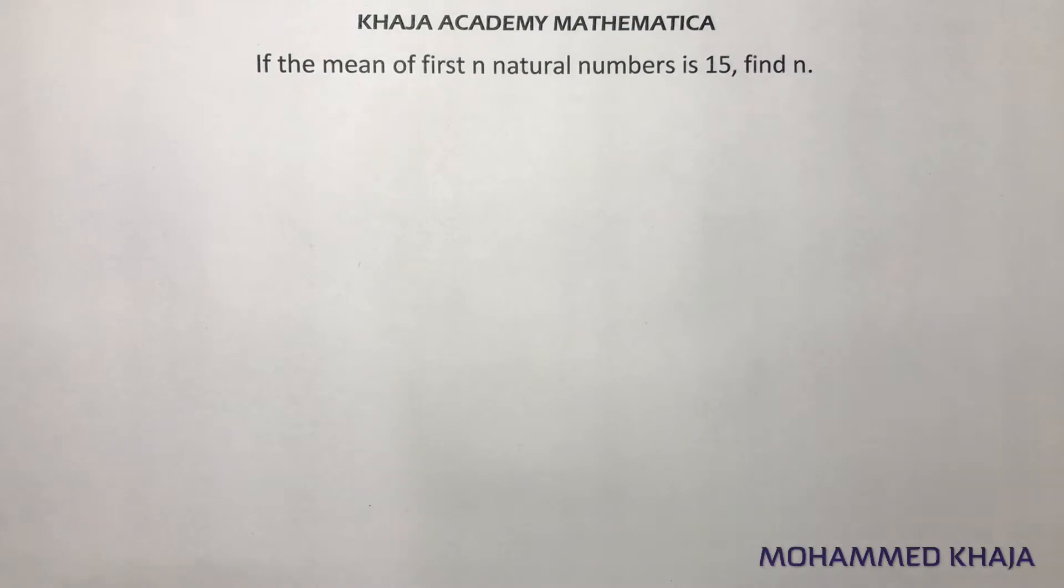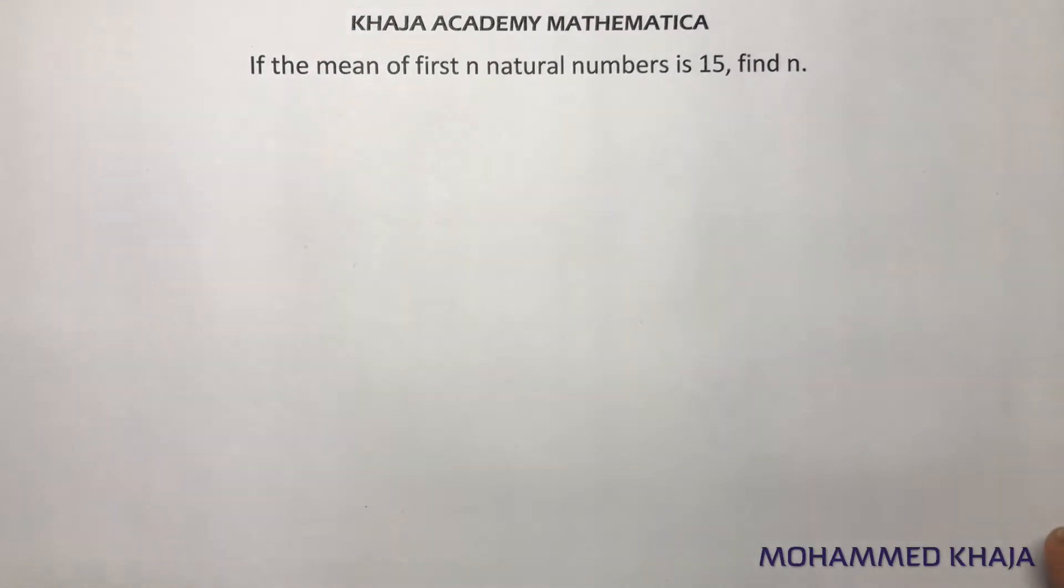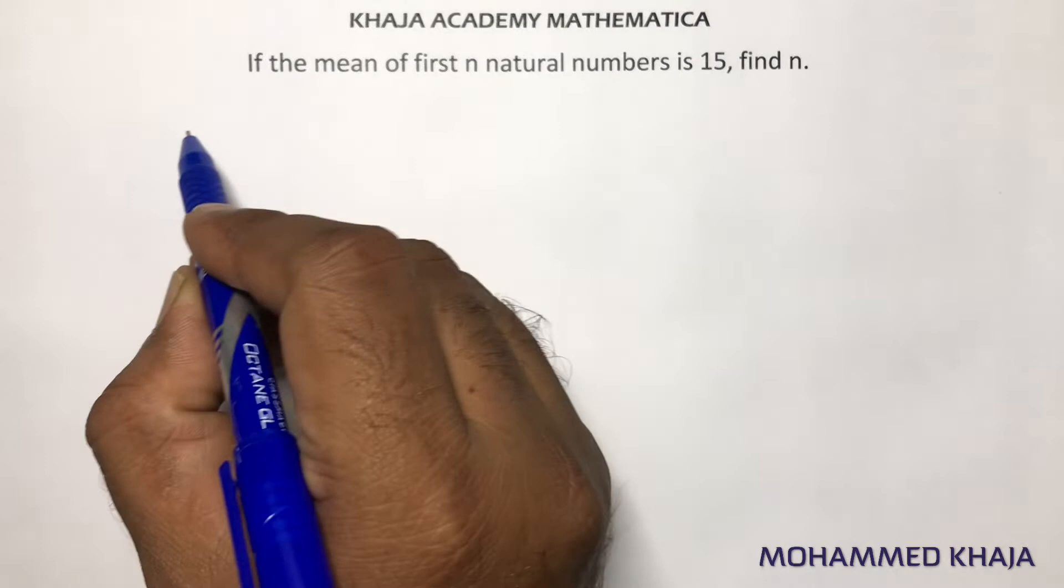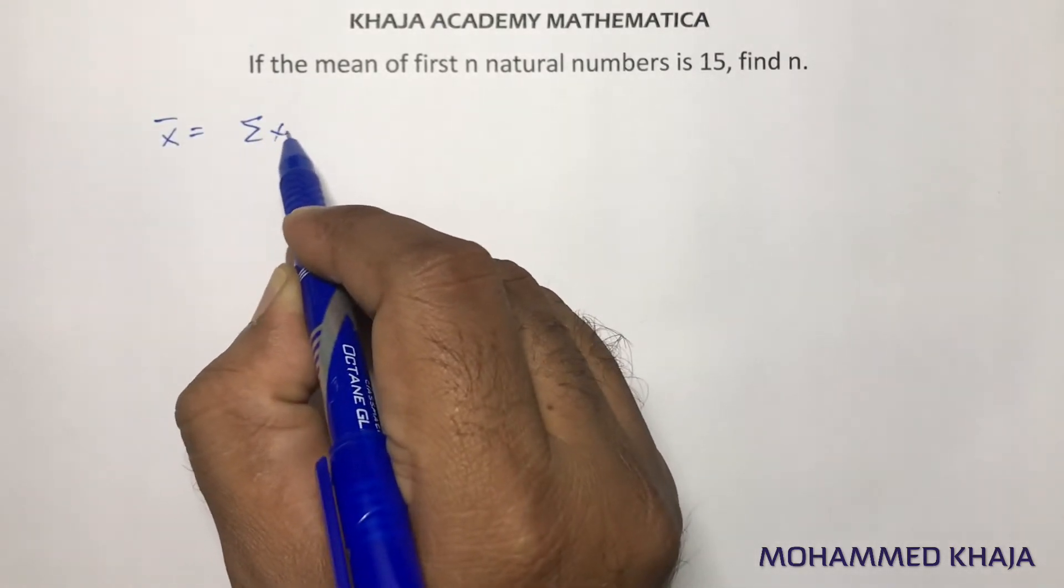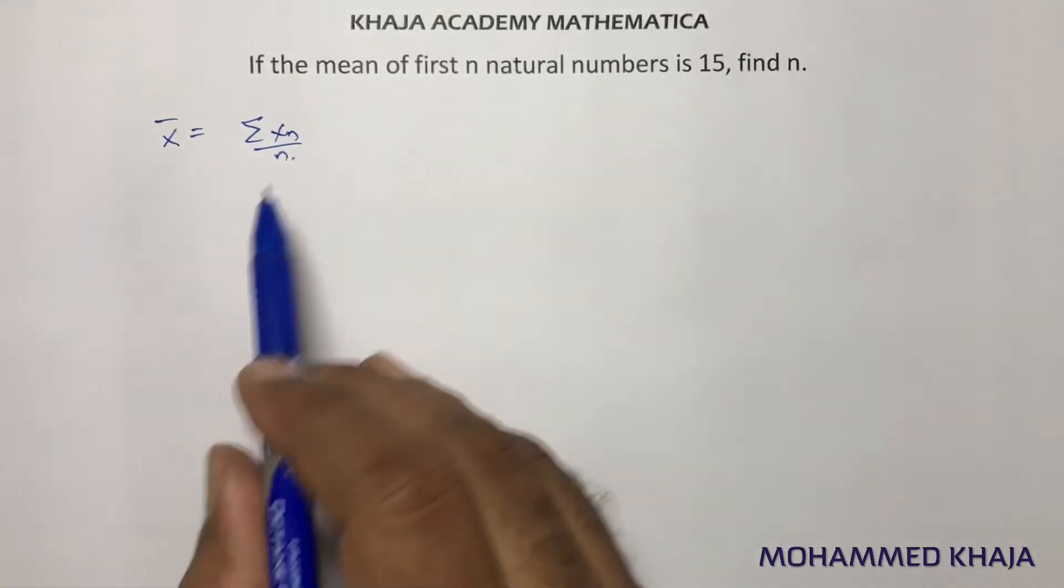If the mean of first n natural numbers is 15, find n. Here, mean is sum of the observations by number of observations.